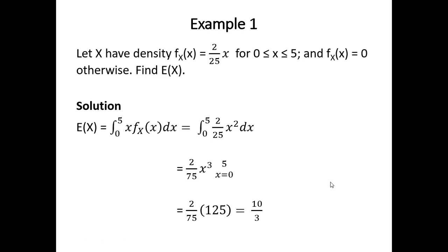Example one. Suppose X has density f_x(x) = (2/25)x for x between 0 and 5, and f_x(x) = 0 otherwise. Now this is just a function of a single random variable, and we simply want to find the expectation of x.